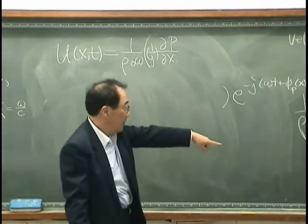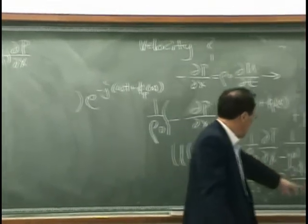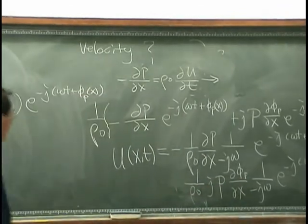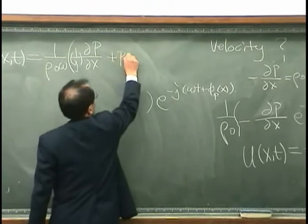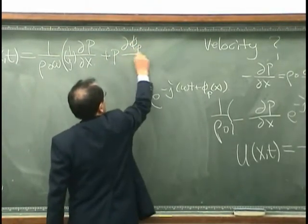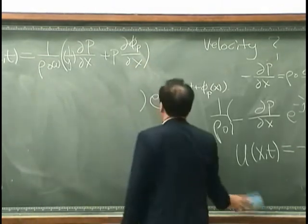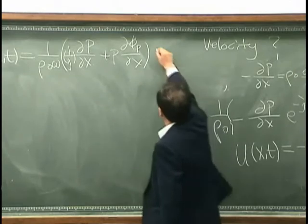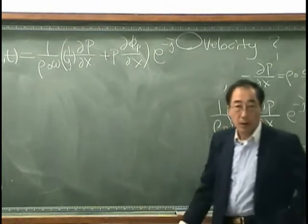And then I have, this term is minus, minus, j, j go away, and the rho omega, so I have plus p phi p/dx. And then I have exponential minus j, this term, okay?